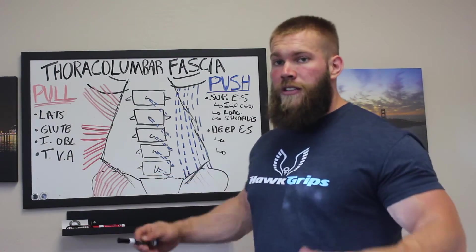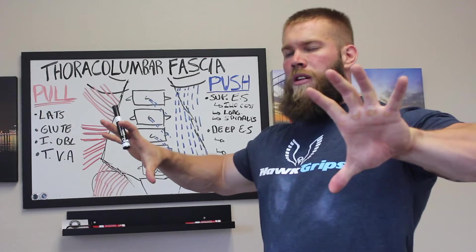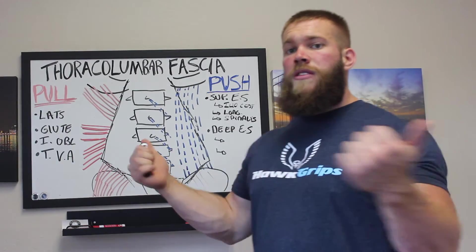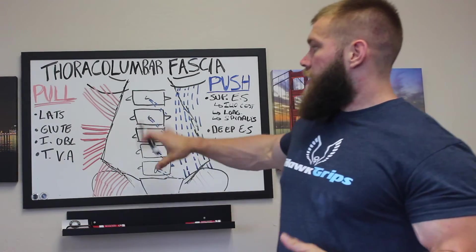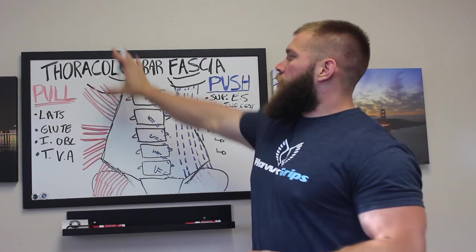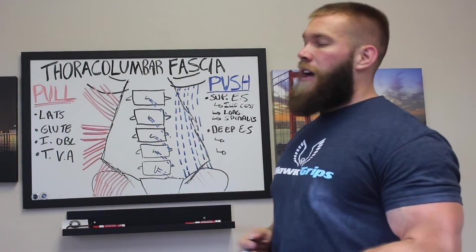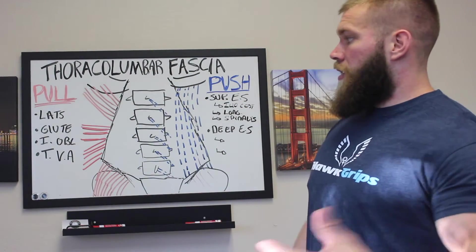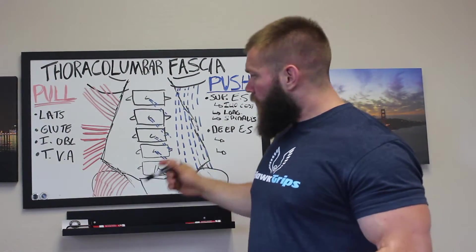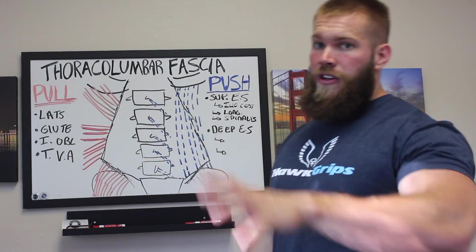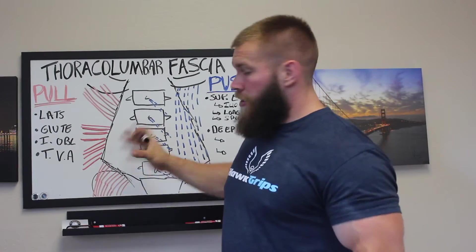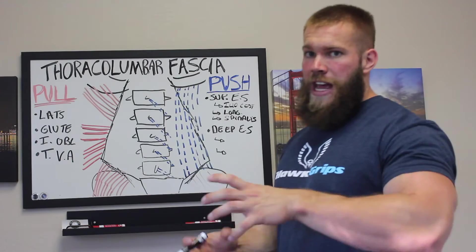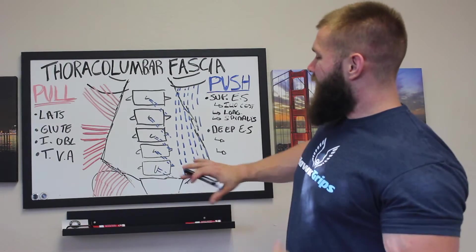The muscles that pull on the thoracolumbar fascia of our lower back are the lats, glutes, internal oblique, and transverse abdominus — and they all pull in separate directions. The lats pull in a superior lateral orientation, tensioning the thoracolumbar fascia. The internal obliques come from the side giving an inferior lateral pull. The transverse abdominus pulls circumferentially around the low back, and the glutes have a downward pull.